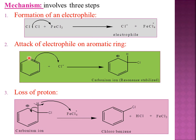The Cl+ electrophile attacks the benzene. The pi bond shifts toward one carbon, giving it a negative charge while the adjacent carbon gets a positive charge. The negatively charged carbon is attacked by Cl+, producing a carbonium ion. Since every carbon of benzene must carry a proton, a proton is represented at the attacked carbon.